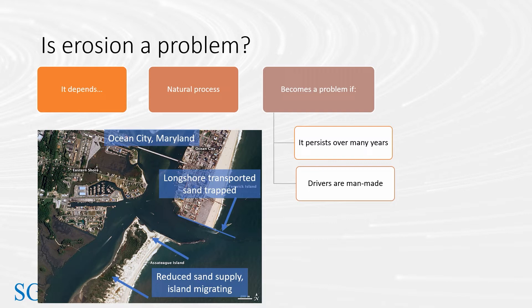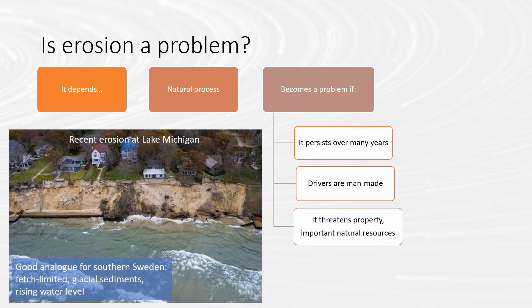In the example shown here, the construction of urban infrastructure and groins perpendicular to the coast have blocked the north-south longshore sediment transport system, resulting in erosion and landwards migration of a barrier island to the south. Thirdly, erosion also becomes a problem if it threatens buildings, infrastructure or recreational resources. The example shows recent erosion along Lake Michigan, which forms a good analogue for the Baltic Sea.